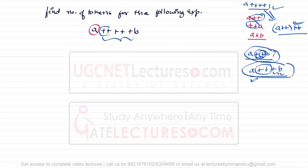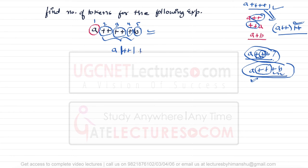In the entire expression a++++++b, we can consider 'a' as one single token, '++' as one token (postfix), '++' as another token (postfix), '+' as one token, and 'b' as one token. So there are five tokens total: token one, token two, token three, token four, and token five.